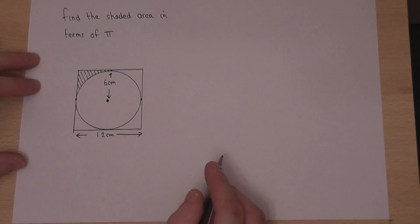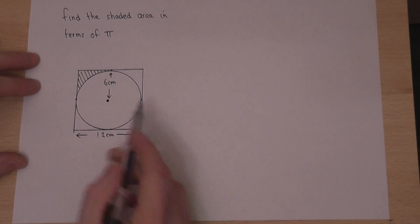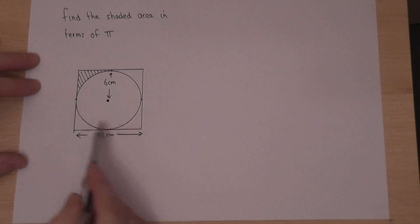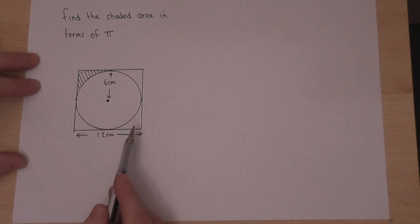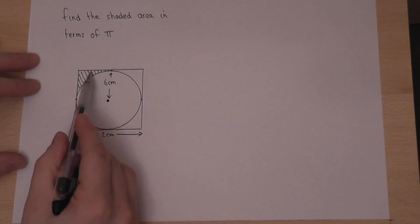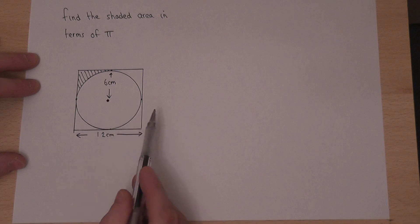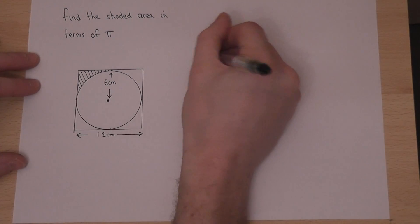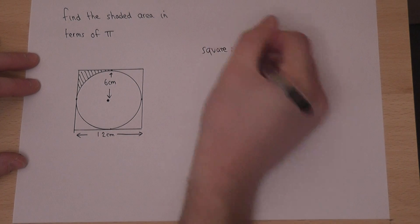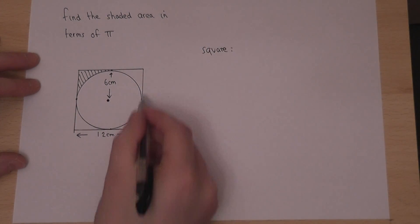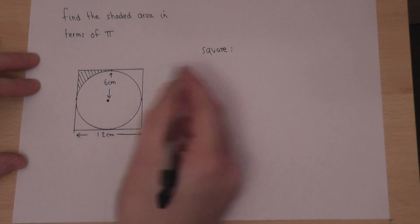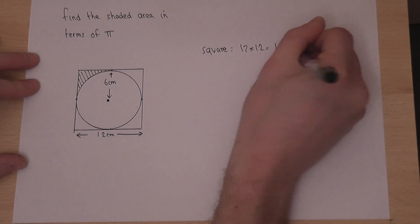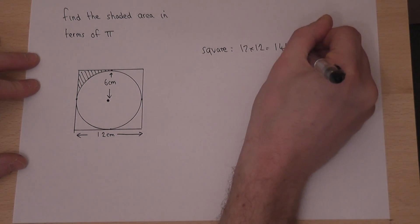This is a nice little question in which we're given a square which contains a circle, and we're asked to find the shaded area in the top left corner. The entire square will have an area of 12 times 12, which is 144 cm².